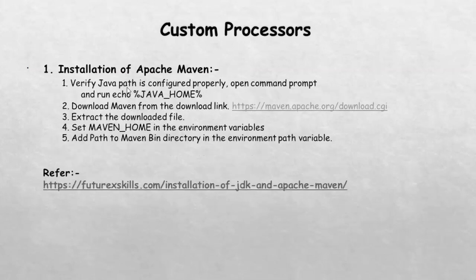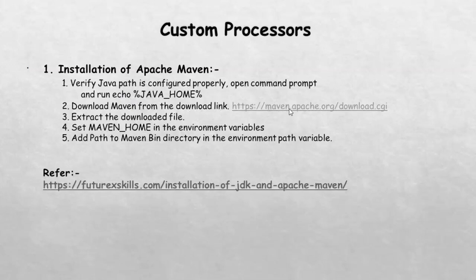To install Apache Maven, we need to have Java configured properly in our environment variable. If you want to know how to install Java and configure the environment variable, please refer to chapter 3. To verify if Java is installed and configured properly, open a command prompt and run echo %JAVA_HOME%. This will show your current Java installation. Once you have verified the Java path, click on the Maven download link to download the zip file. After that, we will extract the downloaded file and set MAVEN_HOME in the environment variable and add the Maven bin directory in the environment path variable.